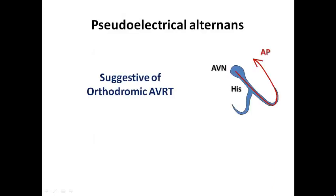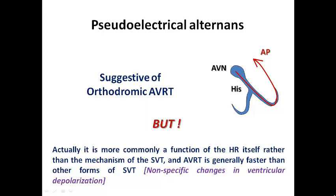Pseudo-electrical alternance is known to many electrophysiologists as suggestive of orthodromic AVRT, because with an accessory pathway there may be abnormality in ventricular depolarization. However, in many papers it is actually a function of heart rate itself rather than the mechanism. It may occur with AVNRT or atrial tachycardia when heart rate is severely elevated — around 170 or 180 — causing non-specific changes in ventricular depolarization. So it may suggest orthodromic AVRT but is not 100% specific.